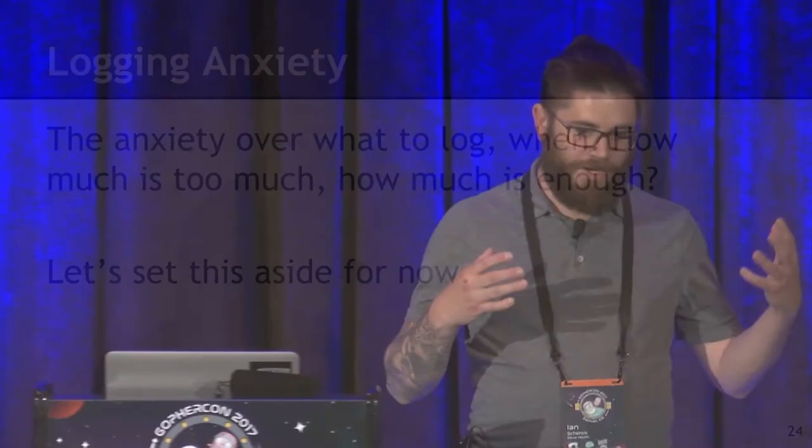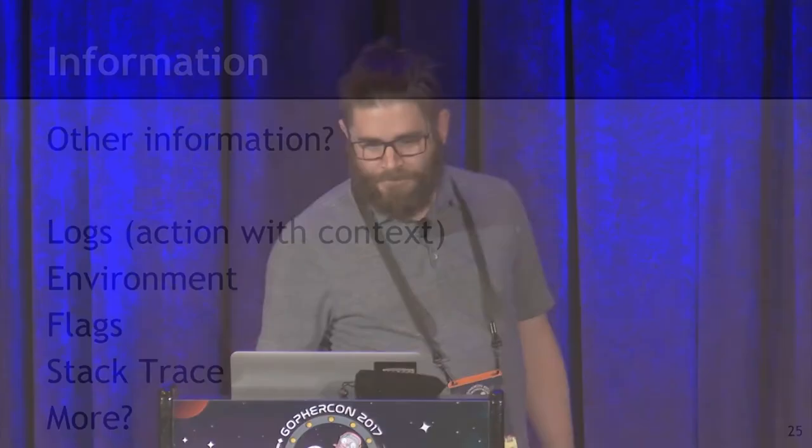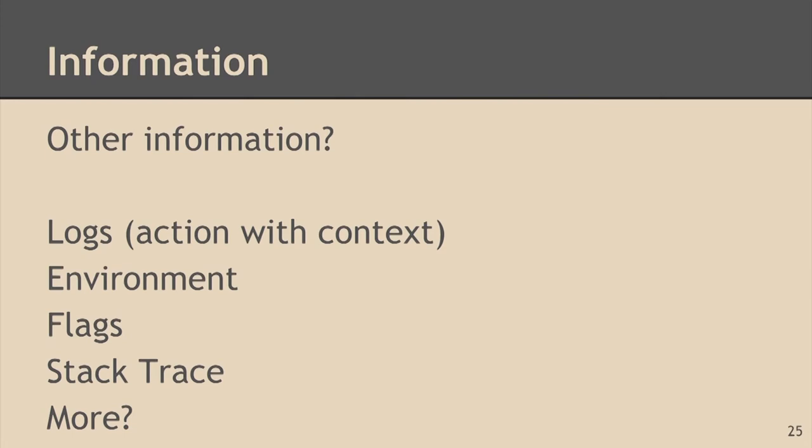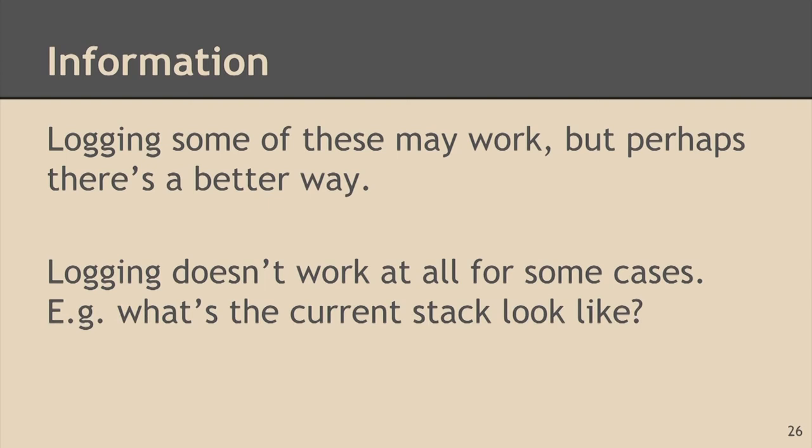So, logging anxiety — the anxiety over what to log, what is too much, what is too little. We've probably all experienced a little bit of anxiety over what to log and how much to log. Set that aside for now, because I have a solution. What are some other sources of information? We have the stack trace, we have logs that are action with context. What about the environment? What about flag values? What about random variables inside your program? Logging some of these may work, but maybe there's a better way — and logging doesn't work at all for some of these cases.